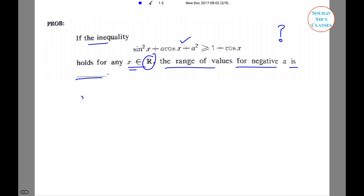So a + a² ≥ 2 when x = 0. So a will be less than equal to -2 because it is given that a is negative.